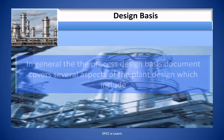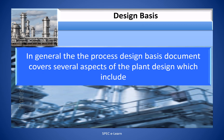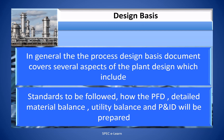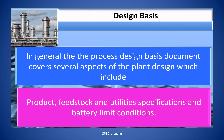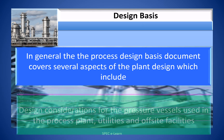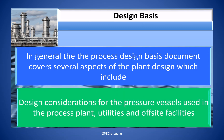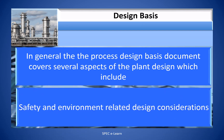In general, the process design basis document covers several aspects of the plant design, which include standards to be followed, how the PFD, detailed material balance, utility balance, and P&ID will be prepared, product, feedstock and utility specifications, and battery limit conditions. Design considerations for the pressure vessels used in the process plant, utilities, and off-site facilities. Safety and environmental related design considerations.